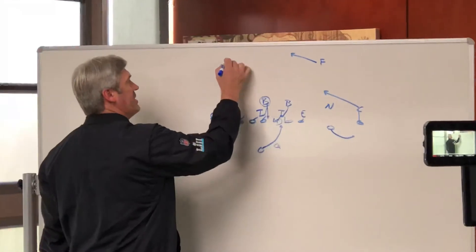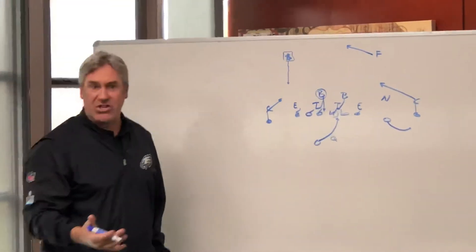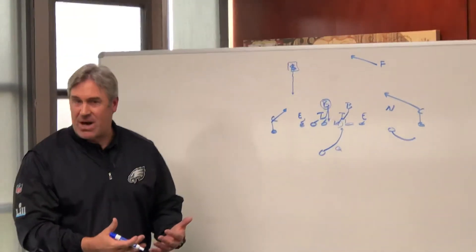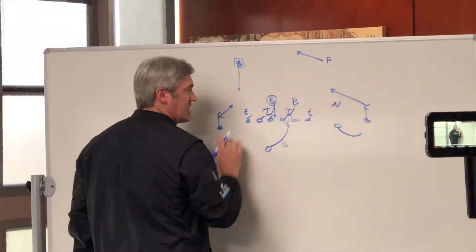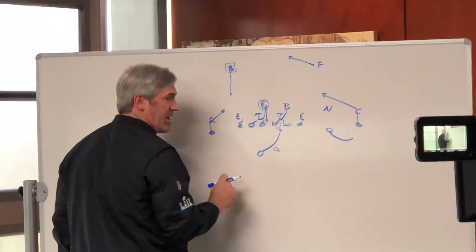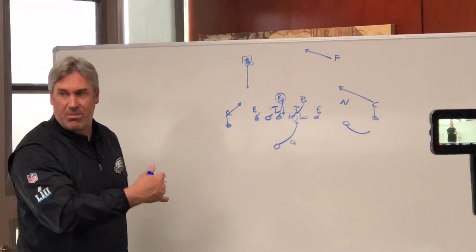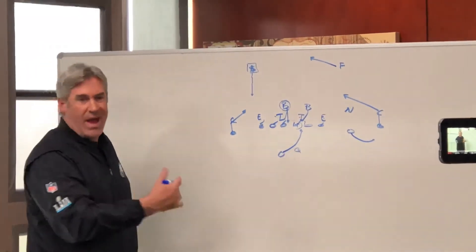So now the quarterback has to read this guy and make a determination. Is it a seven-man box or is it still a six-man box? If it stays a six-man box, six guys, four down linemen, two linebackers, then it becomes a give. Quarterback will give it all that. Just hat for hat and let's go.